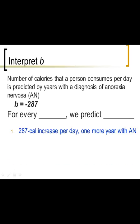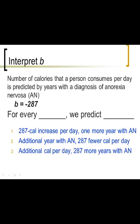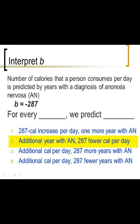Here's another one. The number of calories that a person consumes per day is predicted by years they've been living with a diagnosis of anorexia nervosa. The number of calories consumed per day is Y, and years since diagnosis is X. If B is negative 287, then the answer is: for every one year increase or every additional year with anorexia nervosa, we predict 287 fewer calories consumed per day.